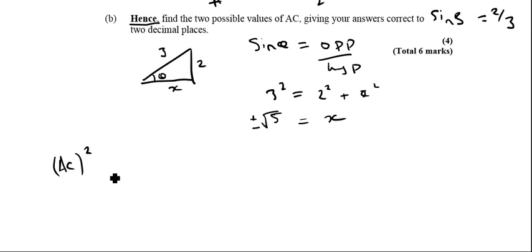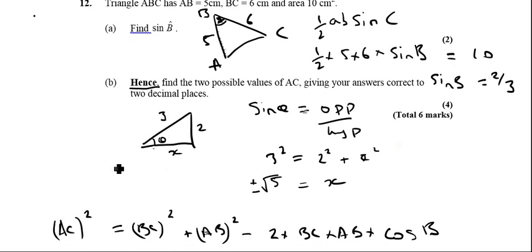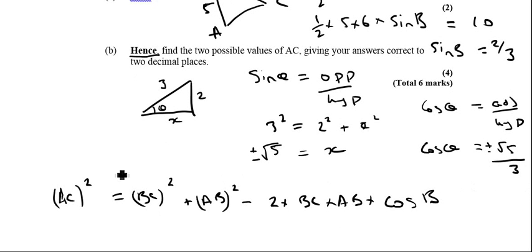The cosine rule says AC squared equals BC squared plus AB squared minus 2 times BC times AB times cos B. So I'm basically just using the cosine rule in that form there. I could do with finding out what cos B is equal to. Now I've got this triangle here, I can find out what cos B is equal to. Cos theta is adjacent over hypotenuse, so therefore cos theta is equal to plus or minus root 5 over 3. So in this case here, this is going to be cos B plus or minus root 5 over 3.